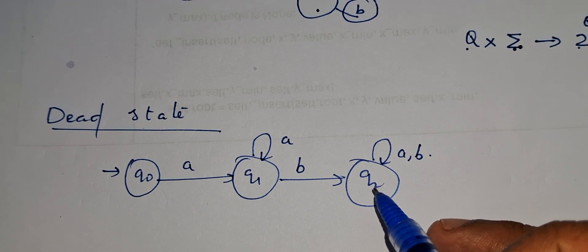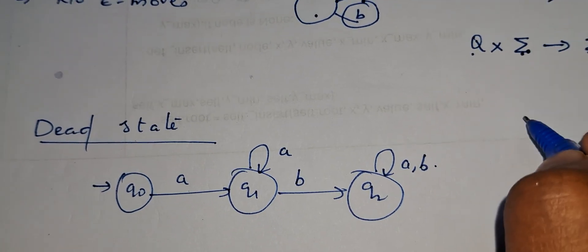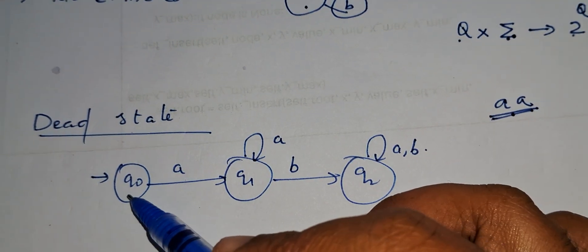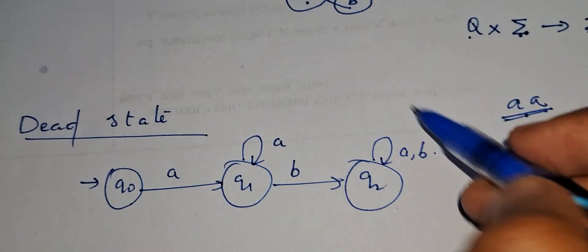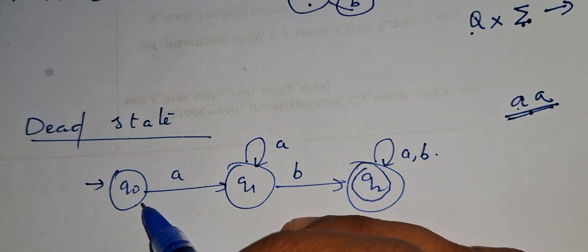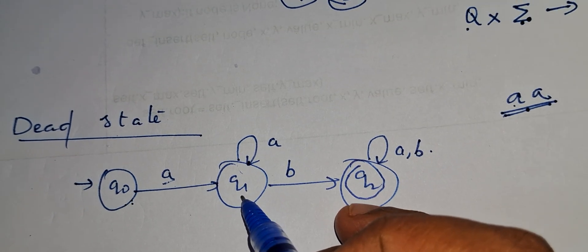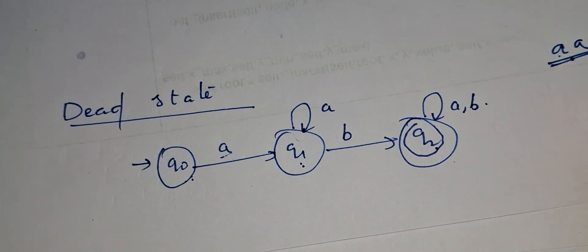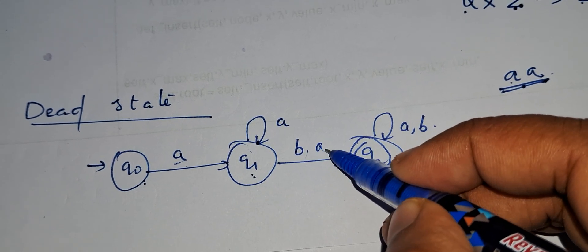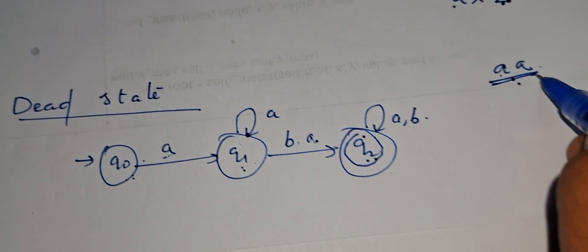Here is an example to show what a dead state is. This automata accepts the set of all possible strings starting with 'a'. A string is accepted when it starts from the starting state and reaches the final state. For example, taking string 'aa': starting from Q0, Q0 on 'a' goes to Q1, then Q1 on 'a' goes to Q1 only — not reaching Q2 — so 'aa' is not accepted. But if I write 'a' for the Q1 to Q2 transition, then Q0 on 'a' goes to Q1, Q1 on 'a' goes to Q2 — we reached the final state, so 'aa' is accepted.